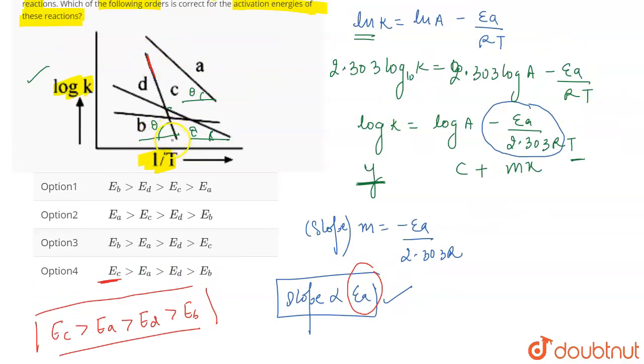But if we talk about the C curve, we can simply see that the angle that will be made by this line C is going to be the greatest. And therefore, it is going to have the greatest slope and hence the greatest activation energy. So the correct answer for this question is going to be option 4. That's all for the question.